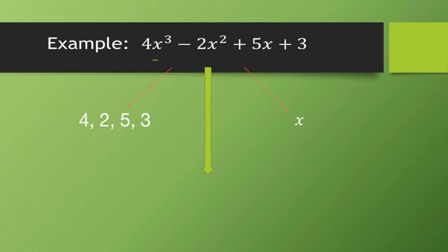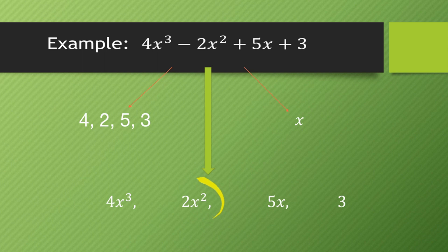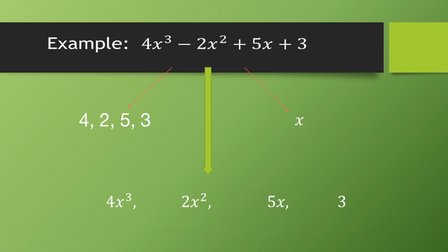Next, let's look at the terms of an expression. In 4x³ - 2x² + 5x + 3, the first term is 4x³, the second term is 2x², the third term is 5x, and the fourth term is 3. These individual parts are called the terms of the expression.